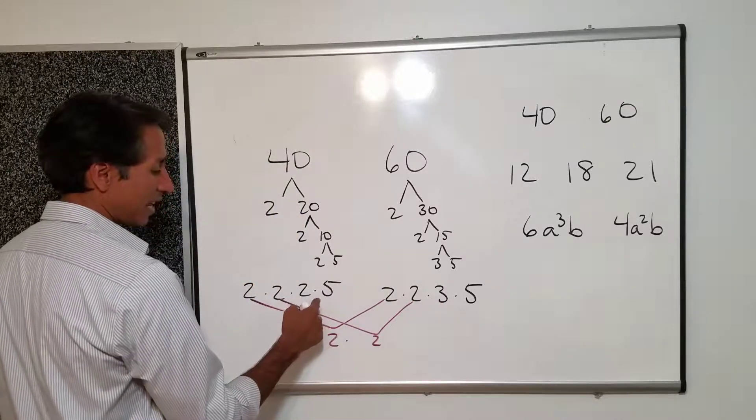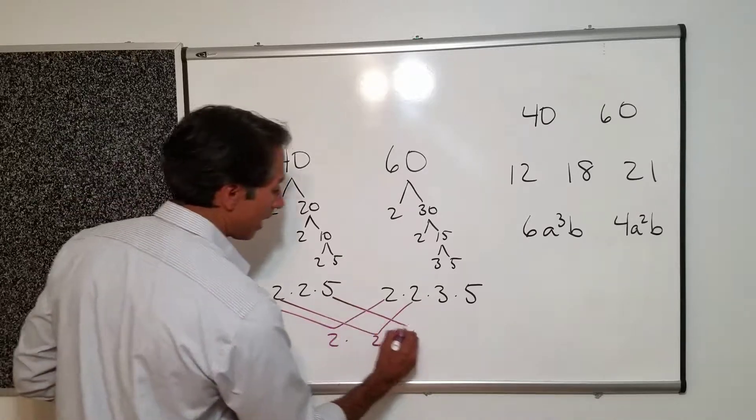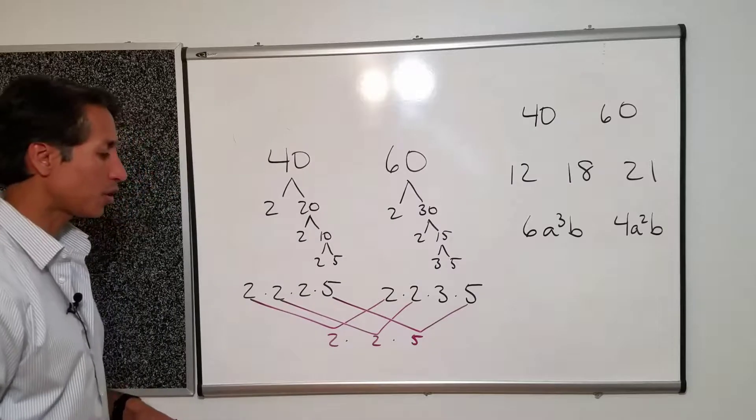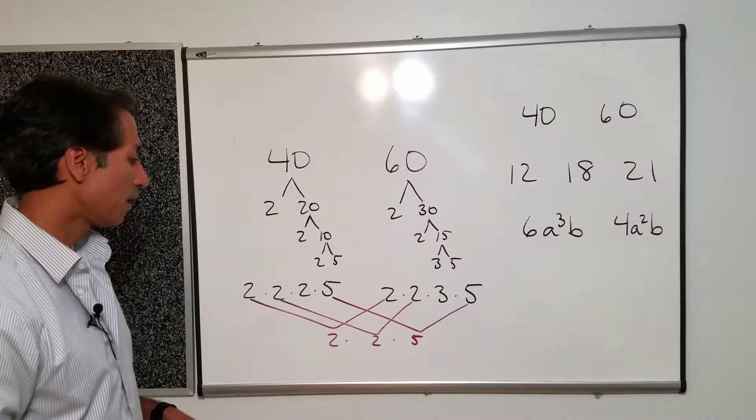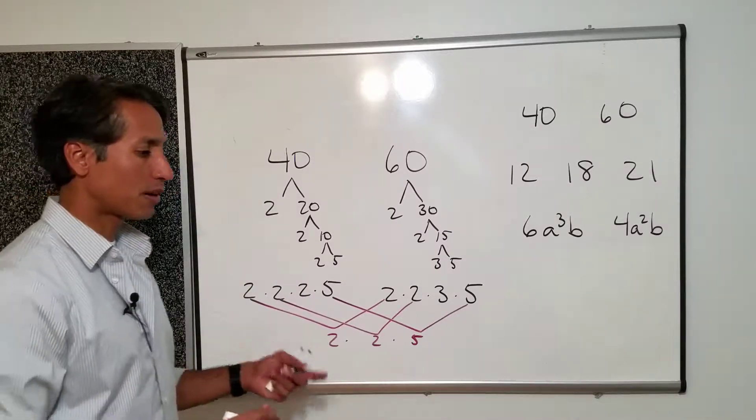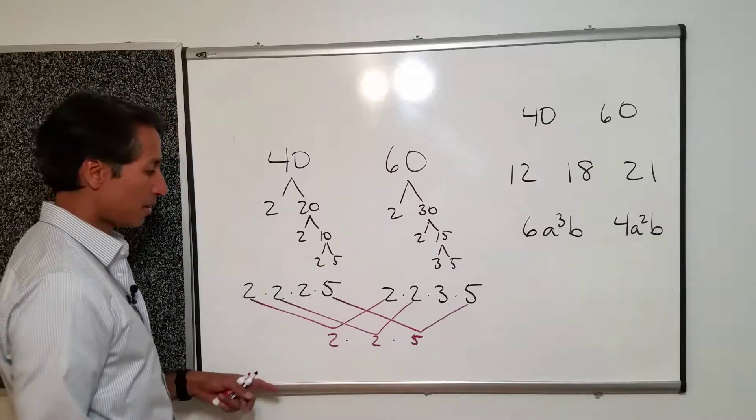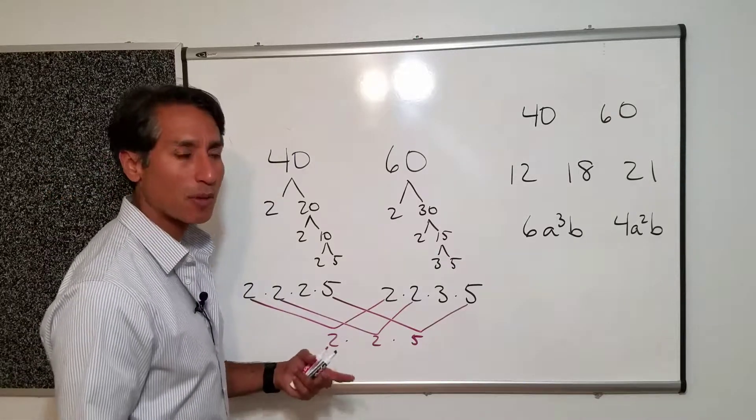Do I have a 3 on this side? I don't. But I do have some 5's and so I can pull that one out as well. Because again we're looking for the greatest common factor. What things do they have in common? And the greatest number that we can create.